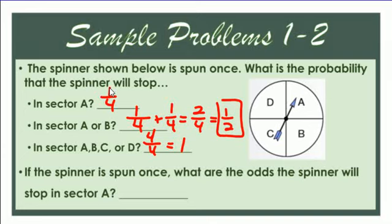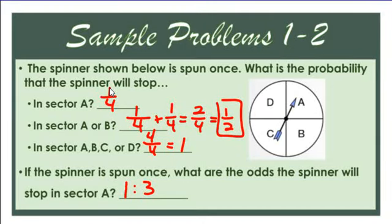Now if the spinner is spun once, what are the odds the spinner will stop in sector A? We compare favorable — sector A — versus unfavorable — not A. How many are not A? Three. So the odds are one to three that it will stop in sector A: one for A, three for not A. That's what odds means — for versus against.